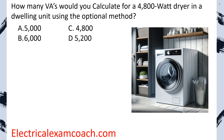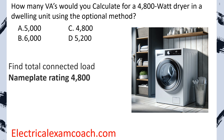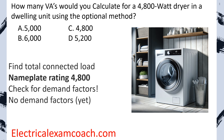How many VAs would you calculate for a 4,800 watt dryer in a dwelling unit using the optional method? First find our total connected load. With the optional method we use the nameplate rating of all appliances. There are no demand factors yet at this portion of the process, and the answer is C.